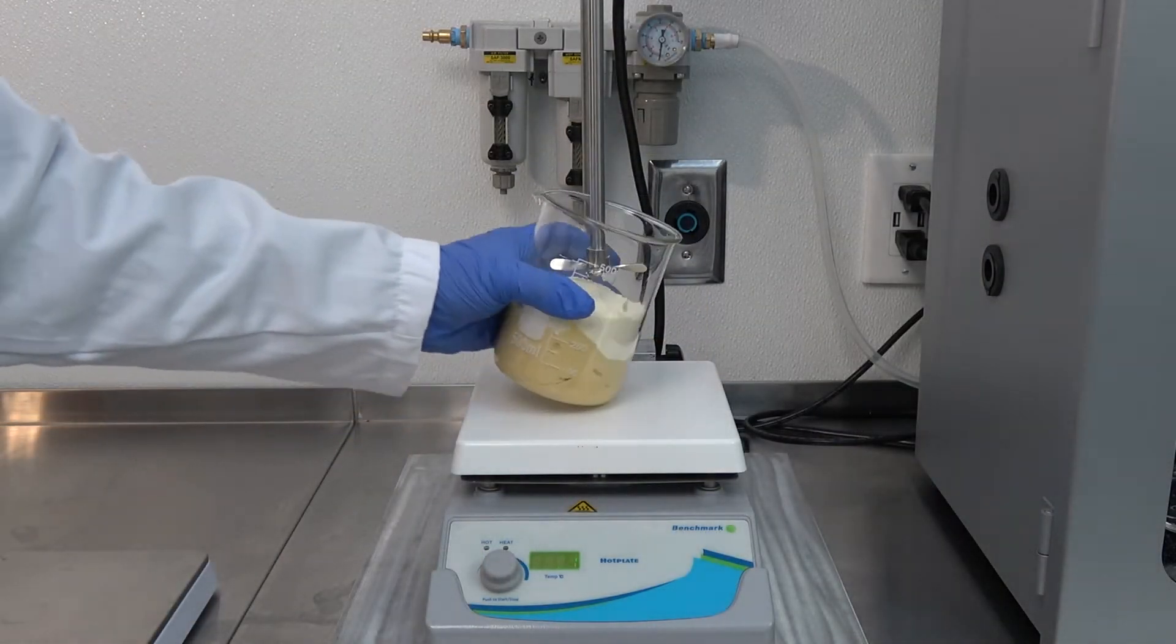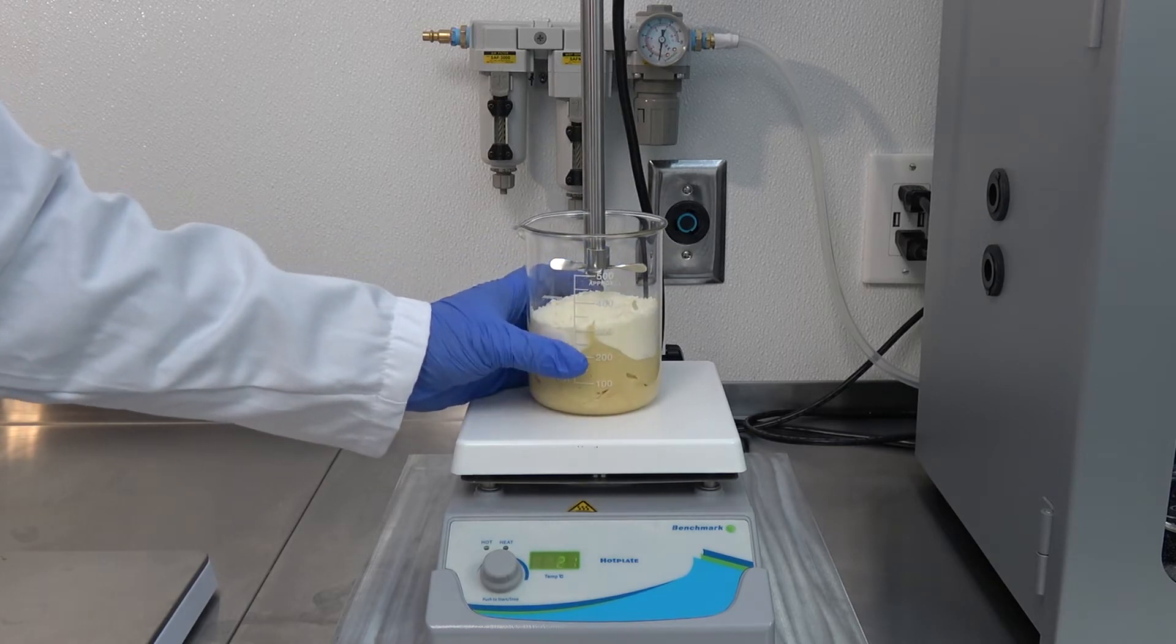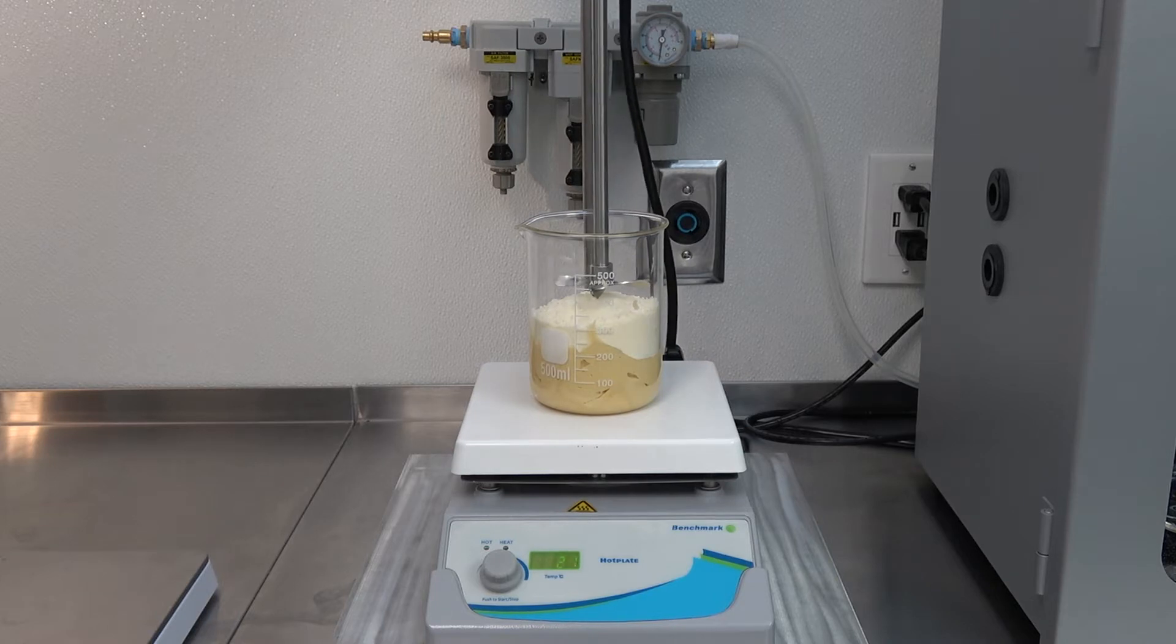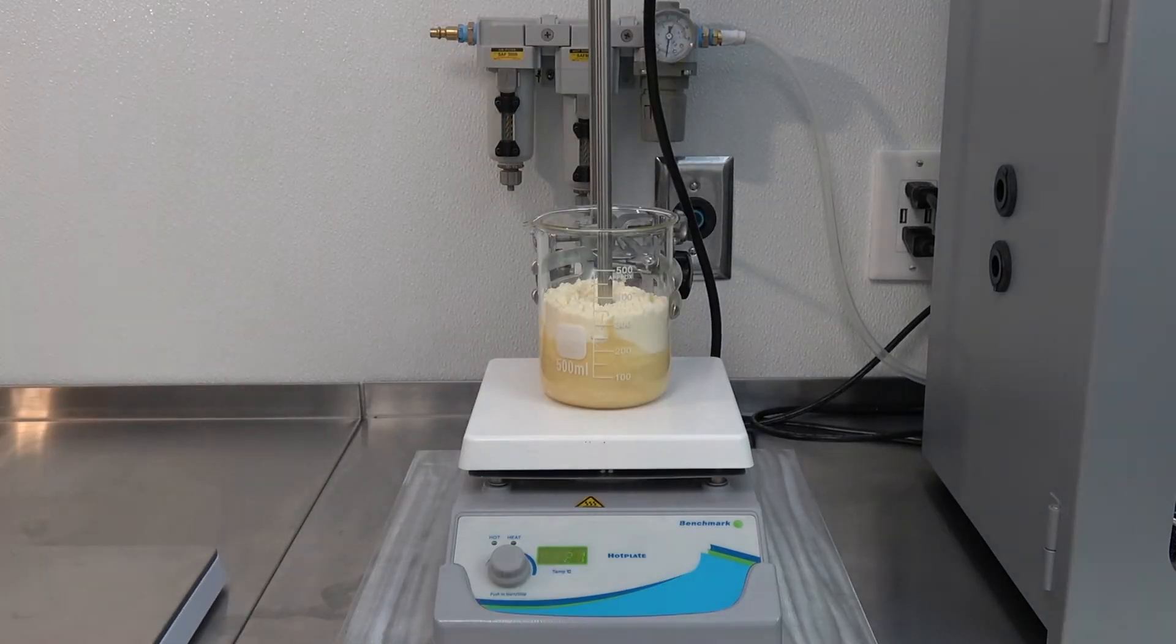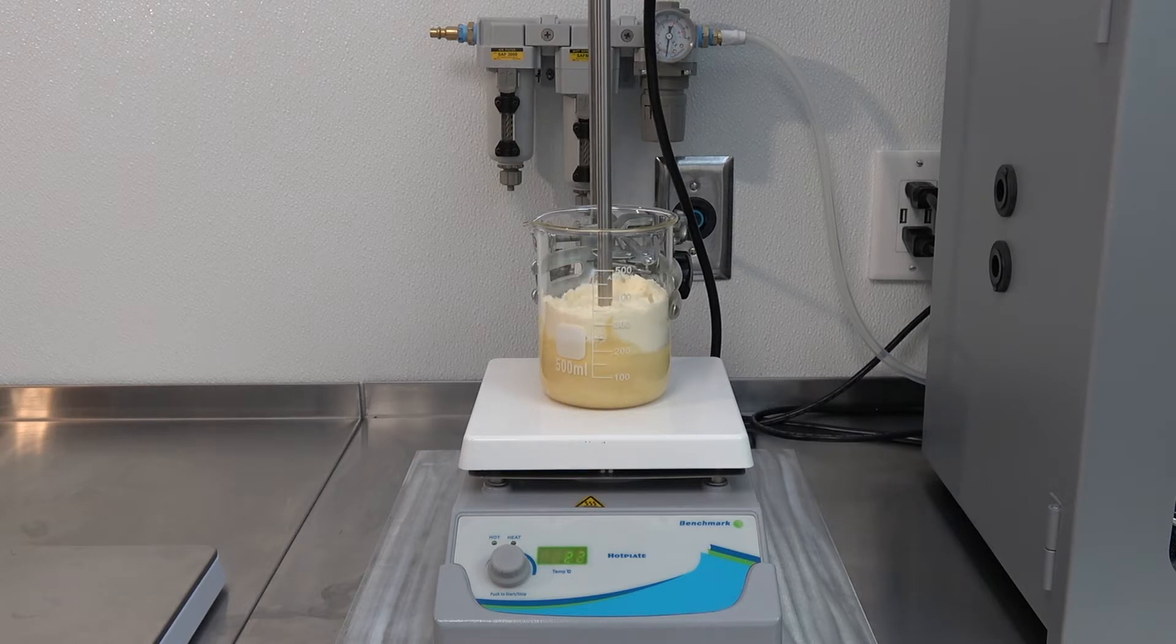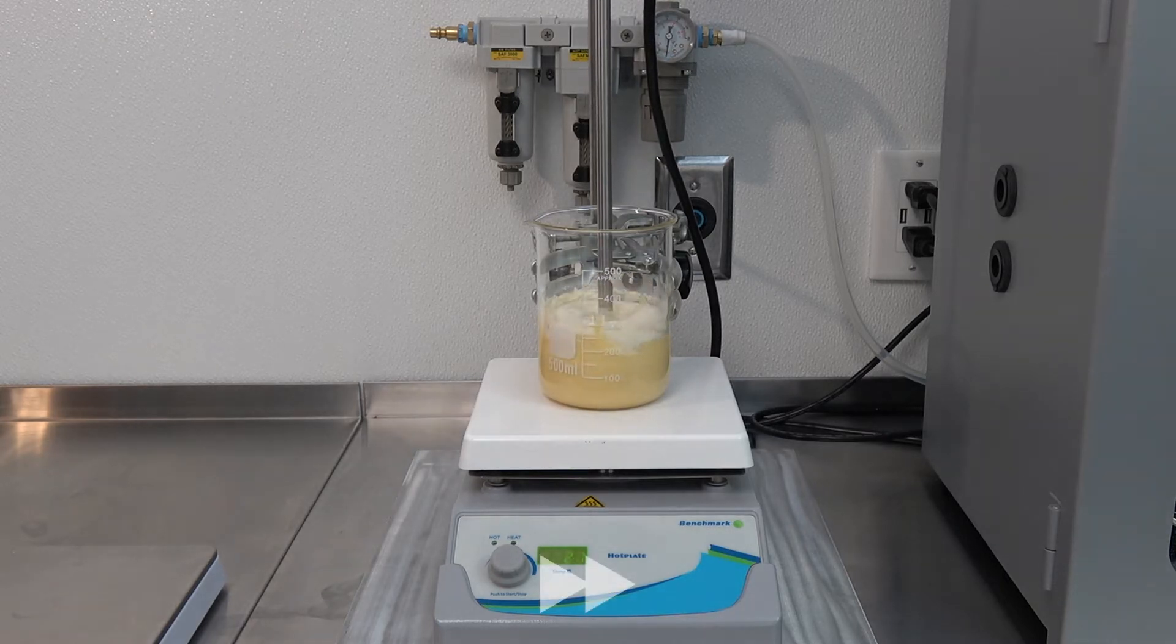Proper mixing is extremely important. Place the beaker on the hot plate and immerse the mixer. Heat the contents of the beaker to 65 to 70 degrees Celsius while mixing thoroughly. Take care to ensure that the premix does not rise above 80 degrees Celsius.